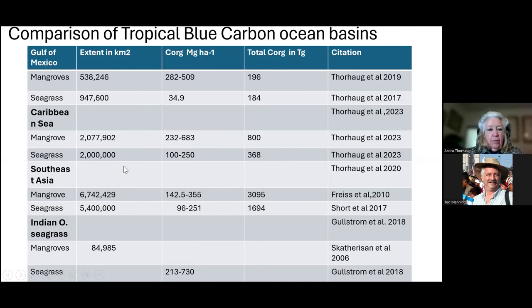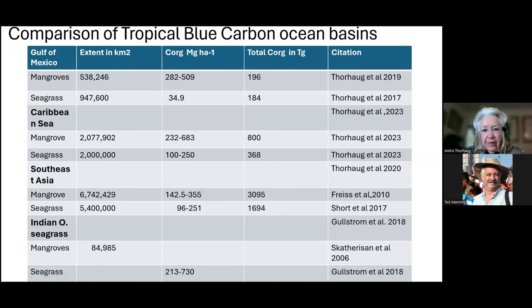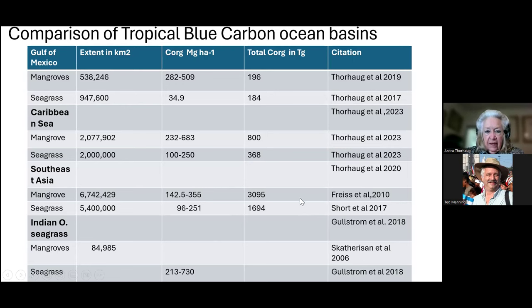Southeast Asia has almost 12,000 kilometers square, and they have 4,700 teragrams of organic carbon as our first estimate. We are still working on the Indian Ocean, but you can see that working on the Caribbean Sea, the Gulf of Mexico, and Southeast Asia could be a large win.